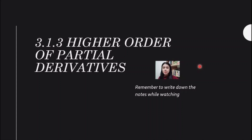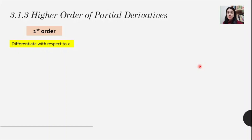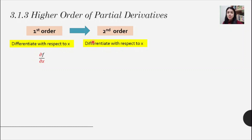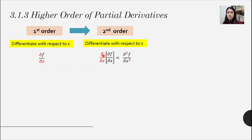Now we go to the higher order of partial derivatives. In the previous subtopic we learned about the first order — that is when we differentiate with respect to x, written as ∂f/∂x. What happens if you want to differentiate a second time? That is the higher order. To differentiate with respect to x again, take the answer of the first order, put it inside the bracket, and write ∂/∂x on the outside.